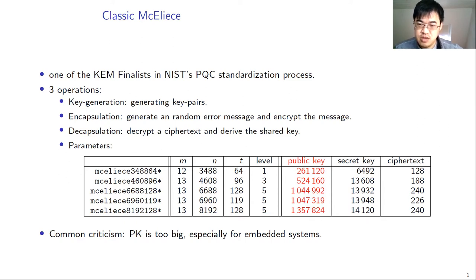It has three core operations. The key generation is used for generating a public key and secret key pair. The encapsulation first generates a random message and then encrypts the message. And the decapsulation can decrypt received ciphertext and then derive a shared key. I list all parameters for different security levels in the table, and you can pause the video if you want to read the details. A common critique for classic mechanism is a big public key.